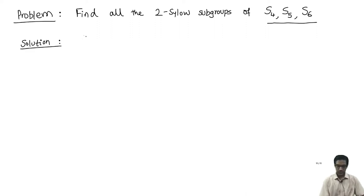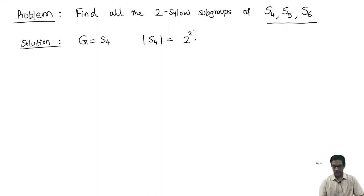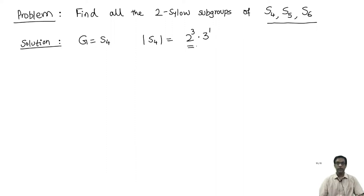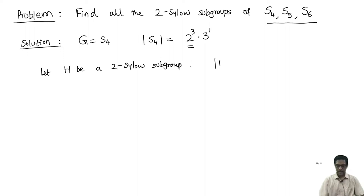Let us do S4 first. The cardinality of S4 is 24, which is 4×6 = 8×3 = 2³×3¹. So the 2-Sylow subgroup is a subgroup of cardinality 8. Let H be a 2-Sylow subgroup; the cardinality of H is 8.